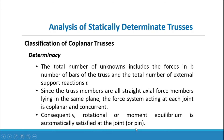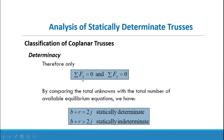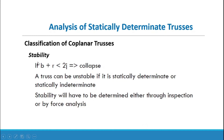To determine determinacy, we apply the equations ΣFx = 0 and ΣFy = 0 at each joint. Comparing total unknowns with available equilibrium equations: if B + R = 2J, the truss is statically determinate; if B + R is greater than 2J, it is statically indeterminate; and if B + R is less than 2J, the truss is unstable and will collapse.